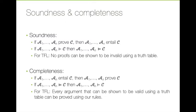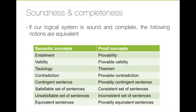By showing that truth-functional logic is sound and complete, we show that the methods we use to evaluate sentences and the relations between them are ones that work. Going over the proofs for soundness and completeness is beyond the scope of this course, though there is a brief overview in the text. The takeaway is that provability and entailment are equivalent. Furthermore, all tautologies are theorems and vice versa, and all unsatisfiable sets of sentences are provably inconsistent and vice versa.